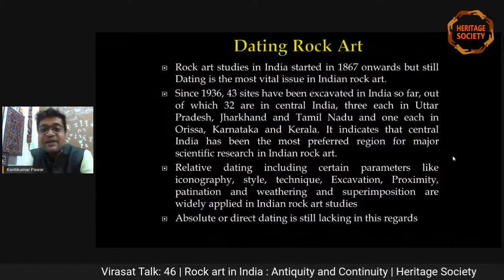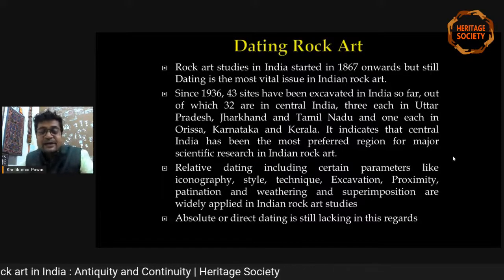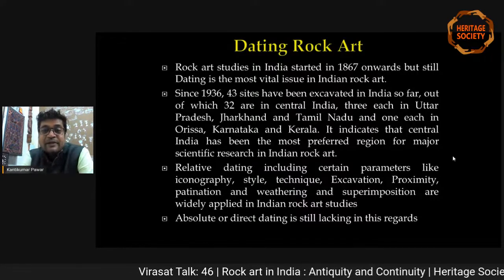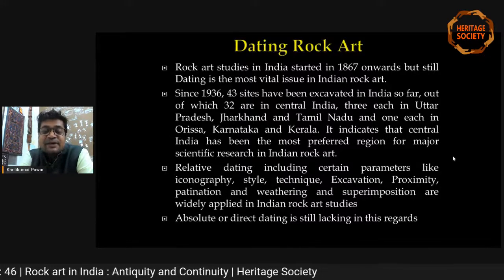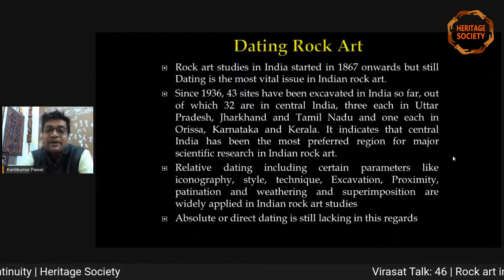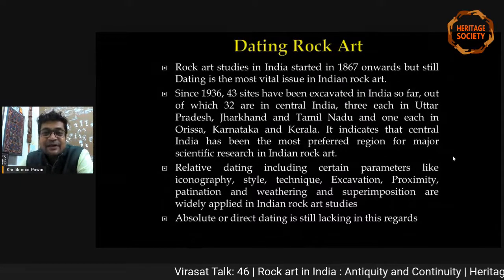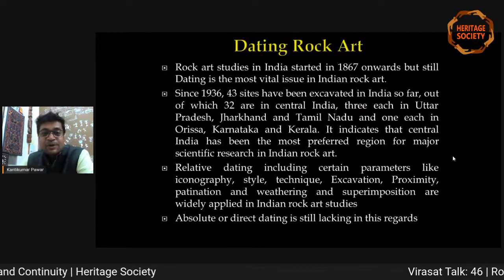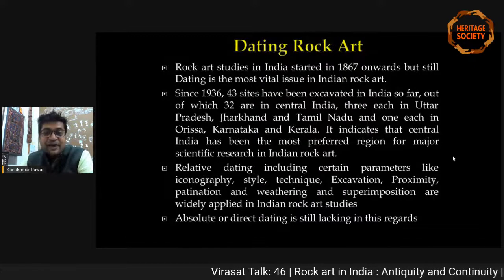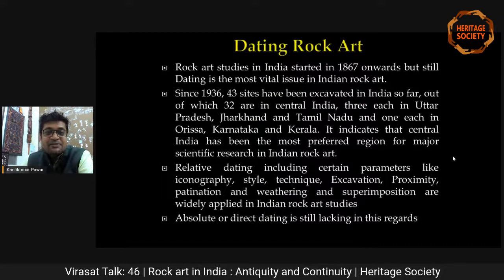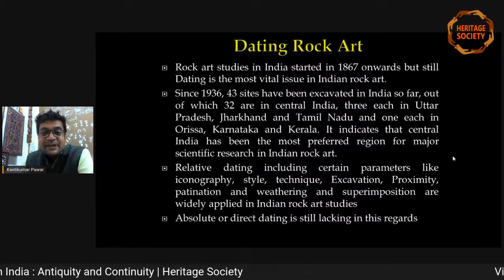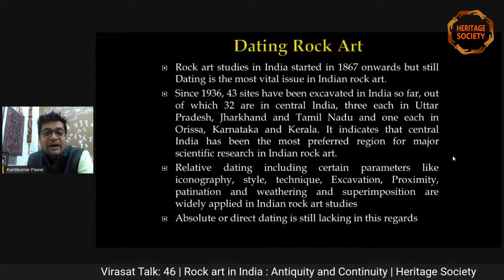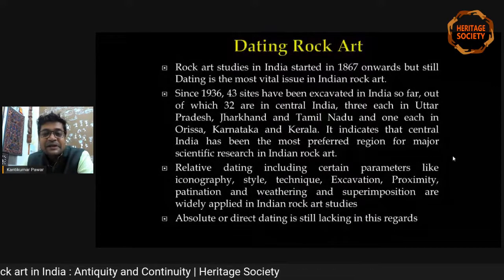Dating of rock art is another very major issue. In archaeology, where we can easily excavate sites and get organic matter, dating is straightforward. But how to date rock art? Rock art studies started in 1867 — almost 150 years of study — but dating is still the most vital issue in Indian rock art. As mentioned, 43 sites have been excavated. Relative dating parameters applied by various scholars include iconography, style, technique, excavation, proximity, attenuation, weathering, and superimposition. But absolute or direct dating is still lacking.